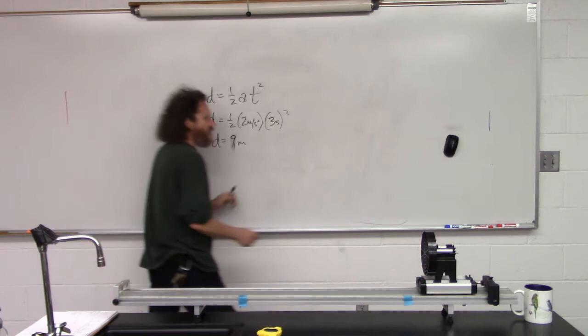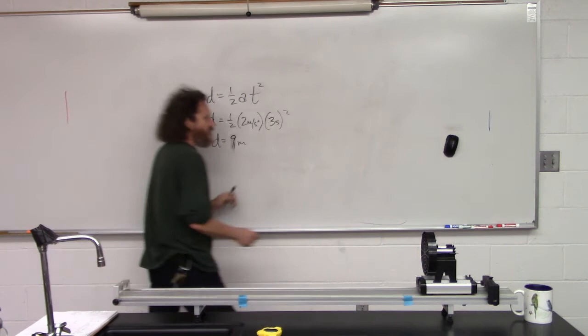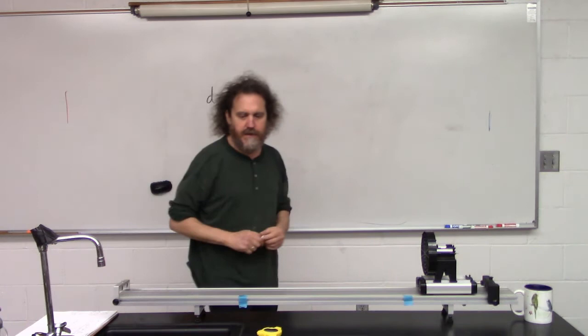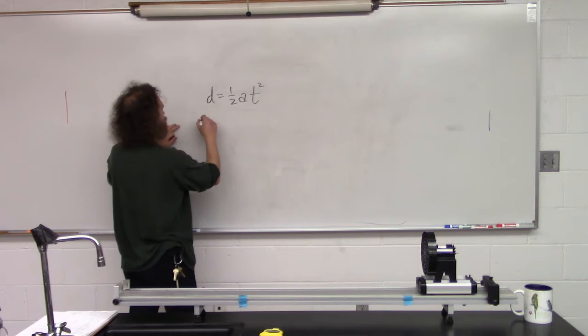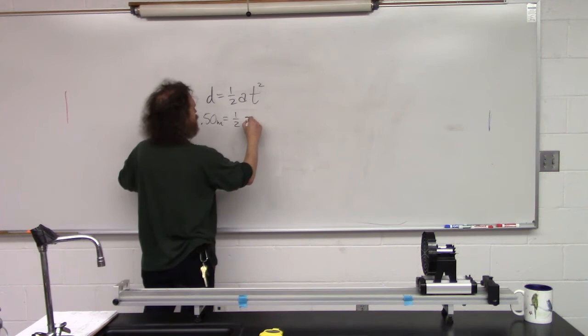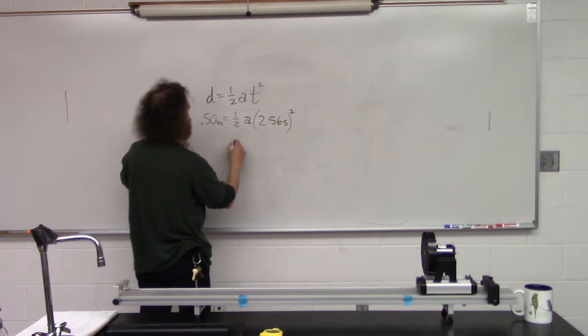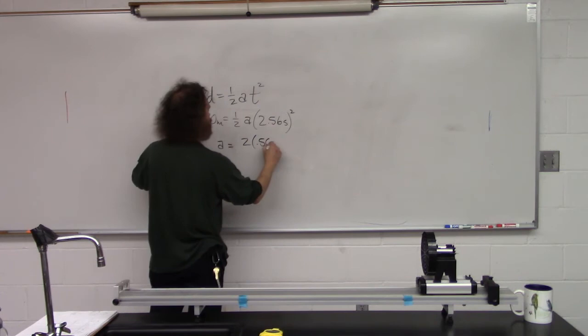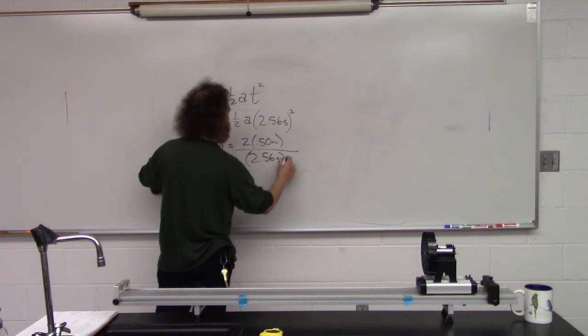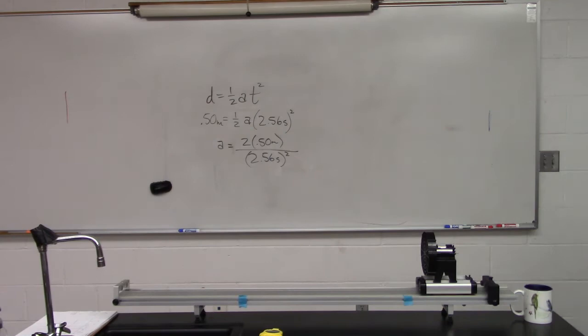So let me calculate the acceleration for our experiment. It accelerated over 0.5 meters in 2.56 seconds. Solving d = (1/2)at² for acceleration gives a = 2d/t². That comes out to 0.153 meters per second squared.